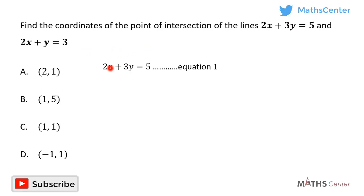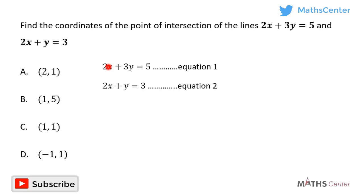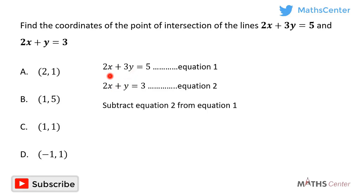The first equation is 2x plus 3y equals 5 — I'll call that equation 1. The second is 2x plus y equals 3 — I'll call that equation 2. I'm going to eliminate x, so I'll subtract equation 2 from equation 1.